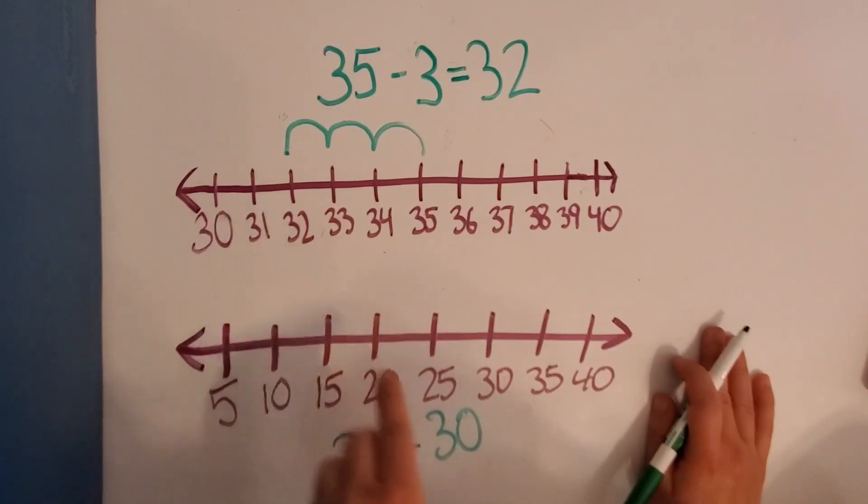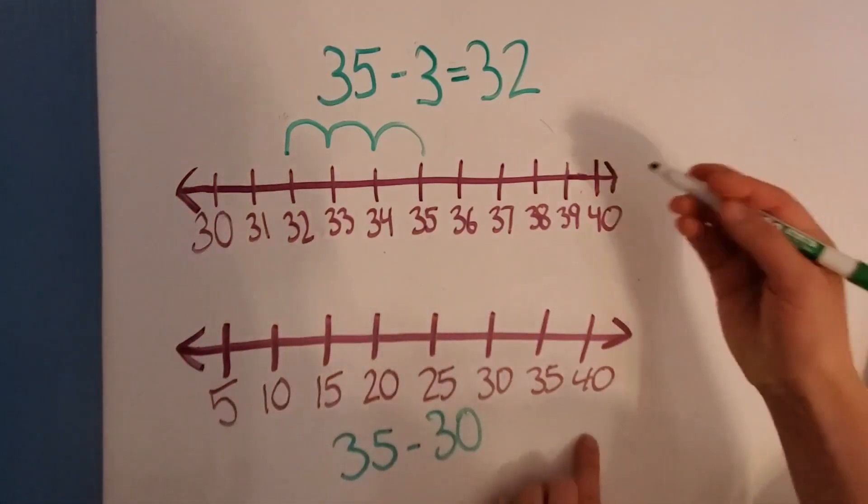How many 10's are in 30? 3. 3 tens are in 30. So we're going to start at 35 and we're going to go back by 10 three times. So let's look at it here. Alright, start at 35, right? That's our whole.